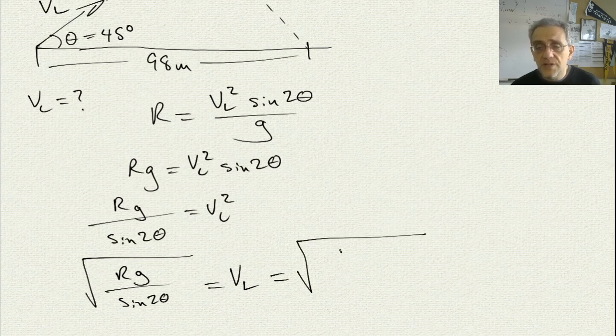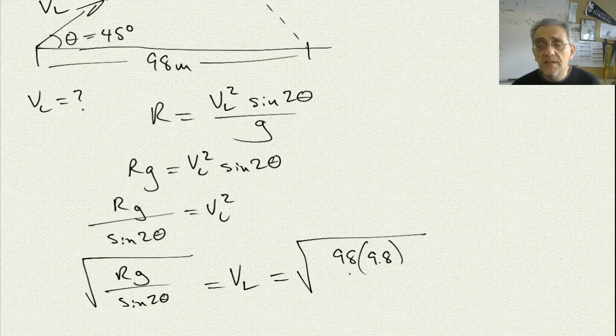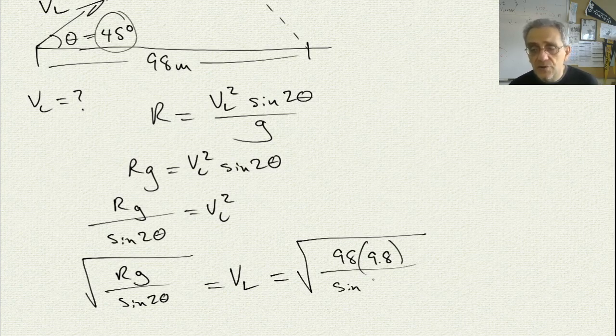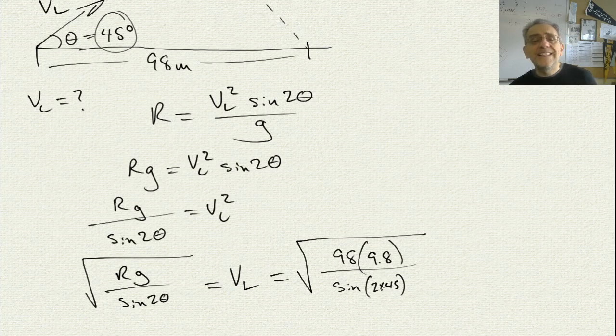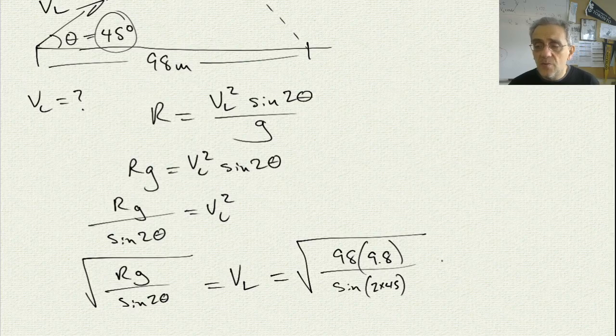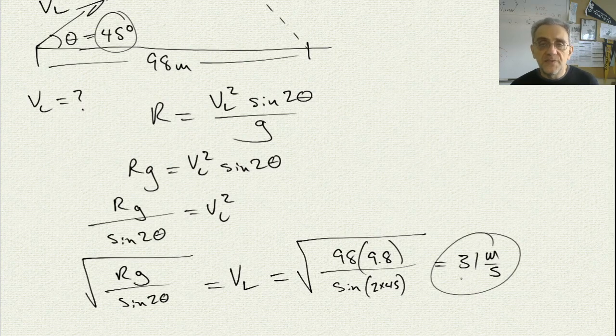Now, I can now plug in my values. R, the range is 98 times G, which is 9.8, divided by sine. And the angle is 45. So, 2 times 45 is 90. I can say 2 times 45. And, by the way, sine 90 is a 1. So, really, we're dividing by 1. It doesn't really make a difference. So, the answer ends up 31. It ends up being 31 meters per second. And that's the launch velocity.